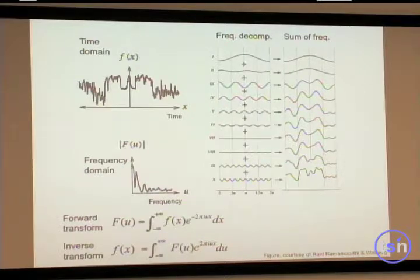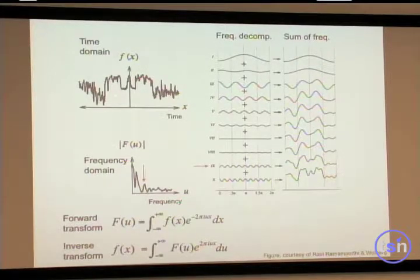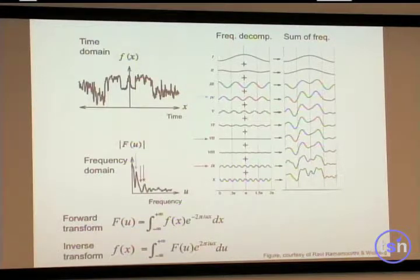This is a time-domain EEG signal where x is time and f(x) is the EEG amplitude. When you do a frequency decomposition it decomposes the signal at different frequencies with different amplitudes. For instance, this signal corresponds to some power at this frequency — this is going to be higher amplitude than this one, which is in the trough and has very low amplitude. These peaks represent the amplitude of different frequencies.